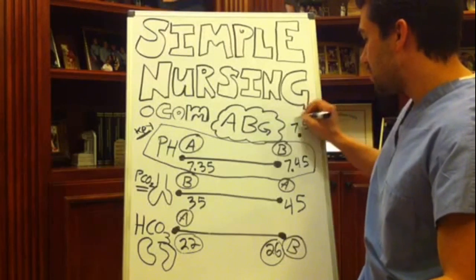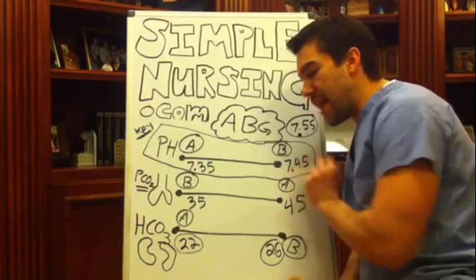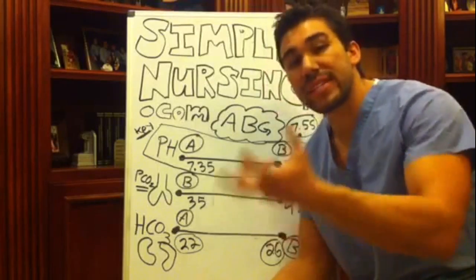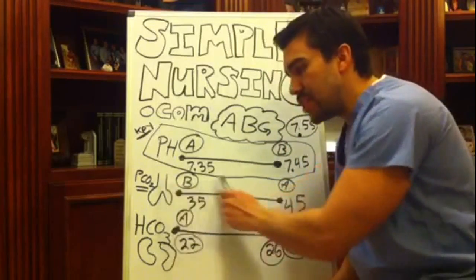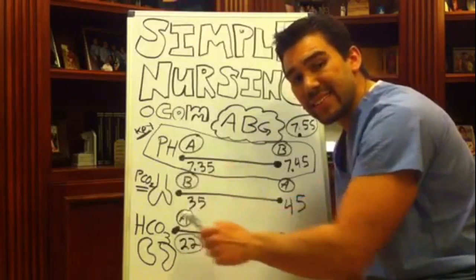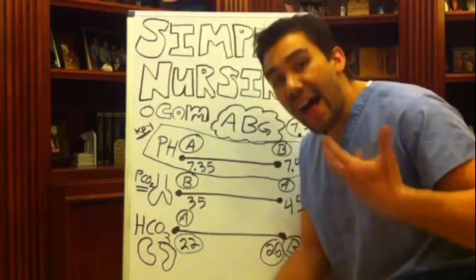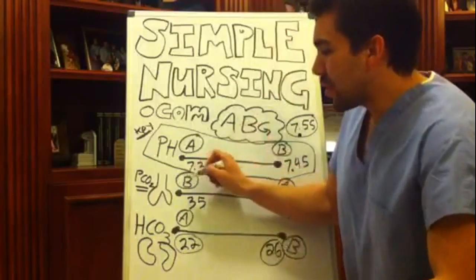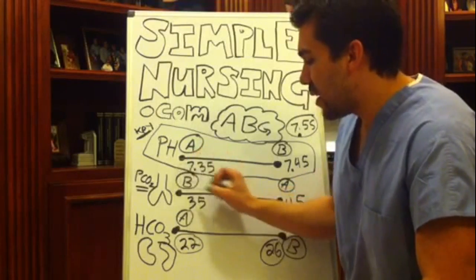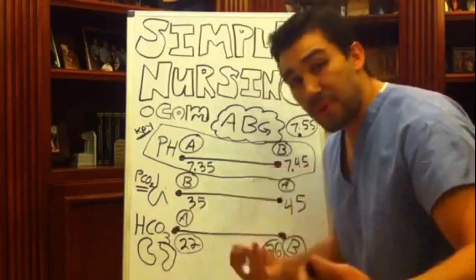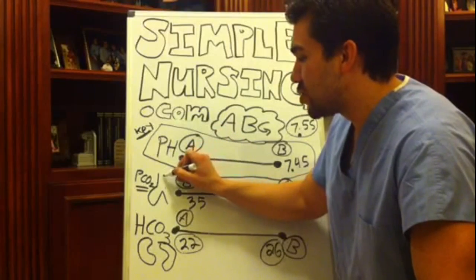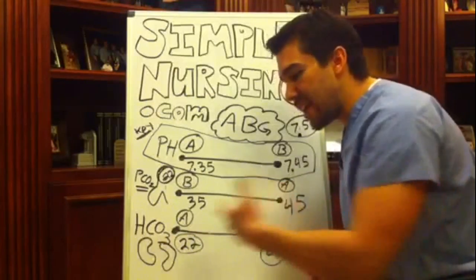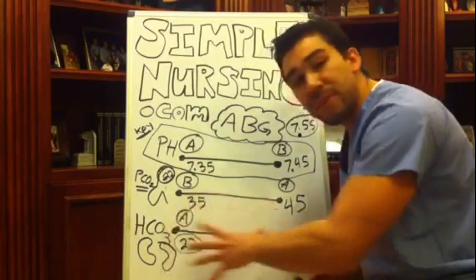Their pH will be something like 7.55 — anything greater than 7.45. Since they're breathing off all their carbon dioxide and retaining oxygen, they should be in an alkalosis state because they're hyperventilating. Their HCO3 should be somewhere less than 35; for demonstration purposes, let's call it 22. Since their kidneys and metabolic system are not really involved right here, we'll put that somewhere in the middle.